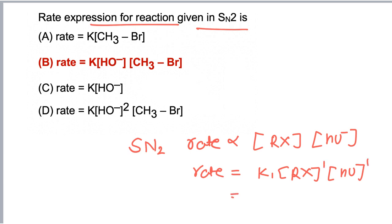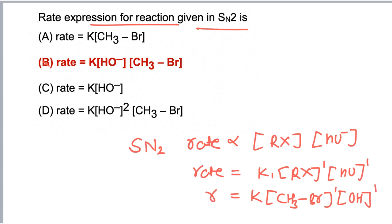So if the alkyl halide CH₃Br is taken and the nucleophile OH⁻ is taken, the correct expression for the rate of reaction is option B, and hence the correct answer is B.